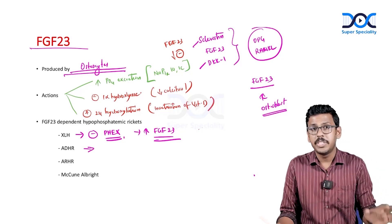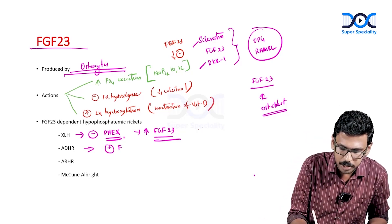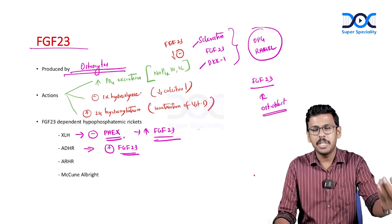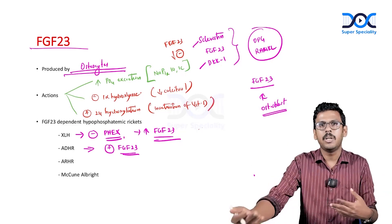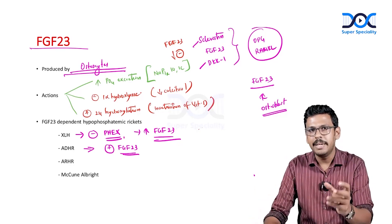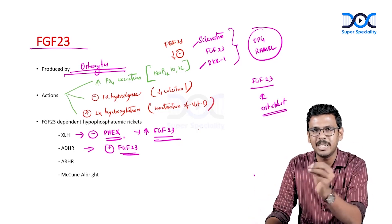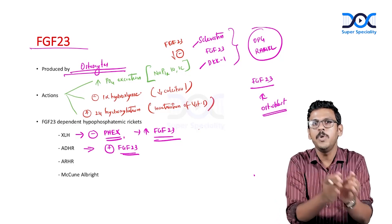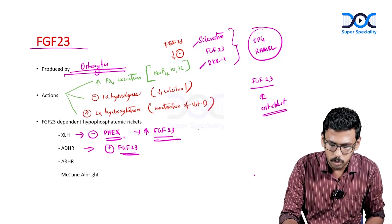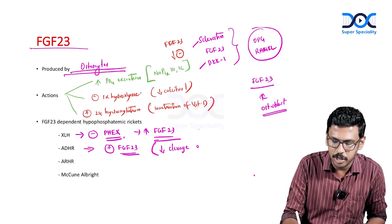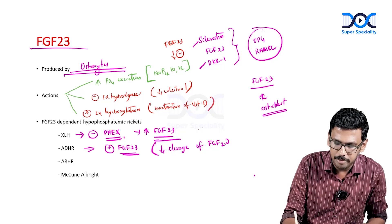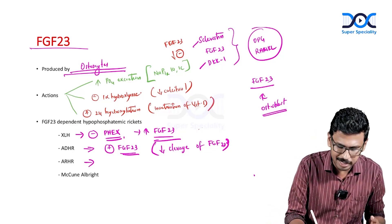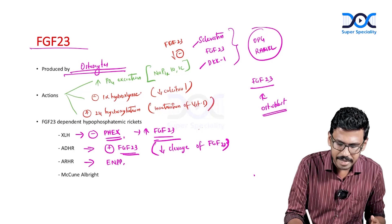Autosomal dominant hypophosphatemic rickets involves an activating mutation in the FGF23 gene. This does not cause increased production of FGF23, but rather renders the FGF23 molecule less susceptible to cleavage by proteases called furins. The mutation makes FGF23 immune to normal cleavage, resulting in reduced destruction and effectively elevated FGF23 activity, driving hypophosphatemia.